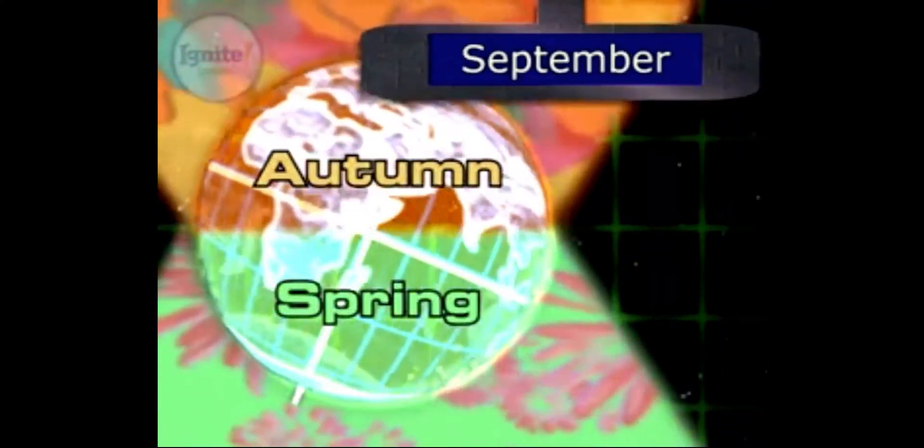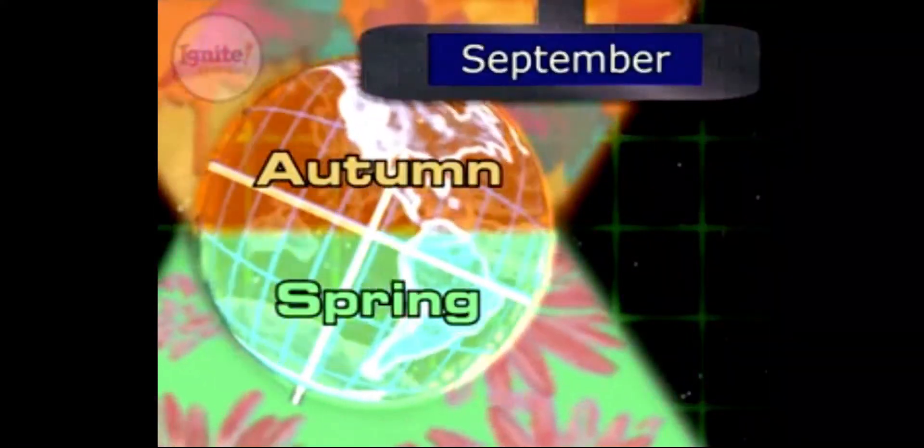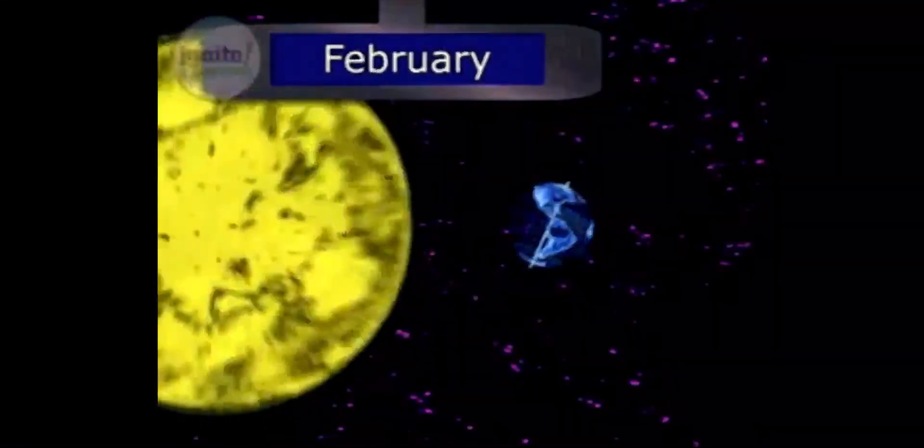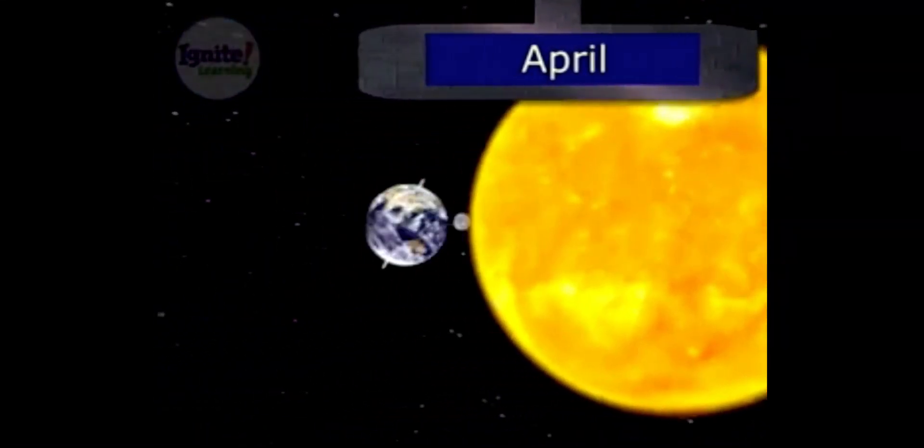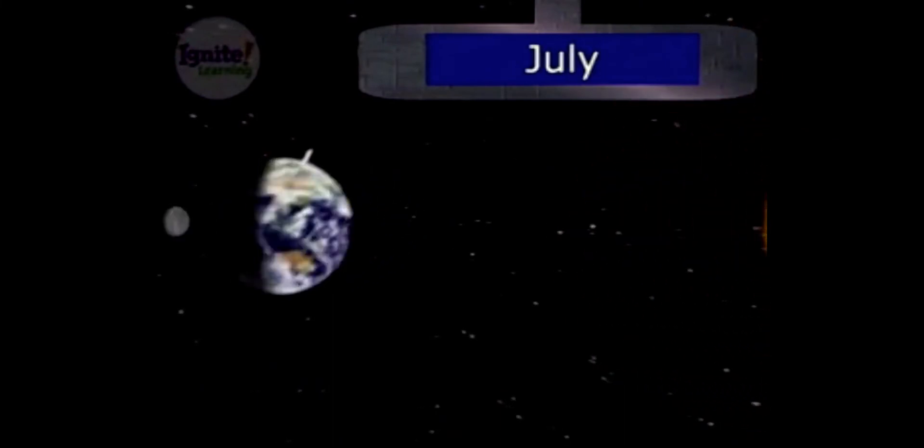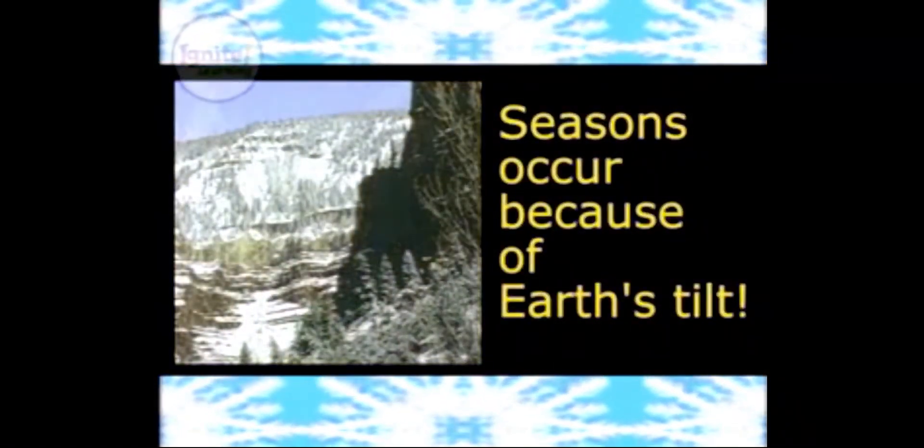So, why do seasons change? Because the tilt of Earth's axis causes the hemispheres to receive different amounts of the Sun's energy. That's some cool science.